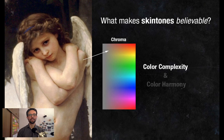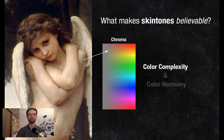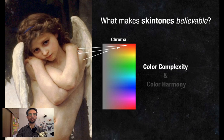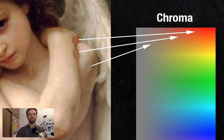Looking at chroma first — I'll pick out a few spots on the Bouguereau painting. This first one is pretty low chroma — it's an area on the arm turning away from the light, getting into halftone, and it's surprisingly gray for a flesh tone. This next point has much more saturation and chroma. And up here in the shadow, maybe some subsurface scattering — here is the highest chroma. So if you compare those colors, they're all similar hues and definitely all skin tones, but the chroma changes a lot.